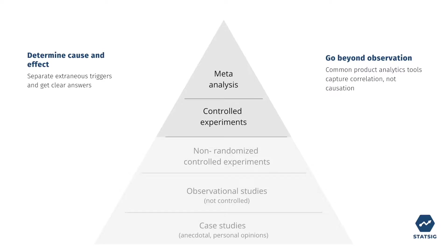A higher level A-B testing is going to be operating at the top of the pyramid, and what makes A-B testing special is that it's a randomized controlled experiment. All of the factors that could potentially influence people's decisions — like outside factors — are all going to be randomly assigned between groups. This means that all the dimensions that could influence our understanding of causation for a selected feature are influencing both groups equally.